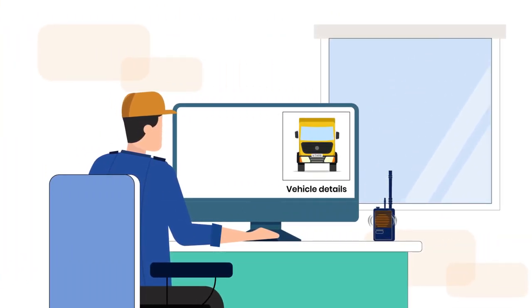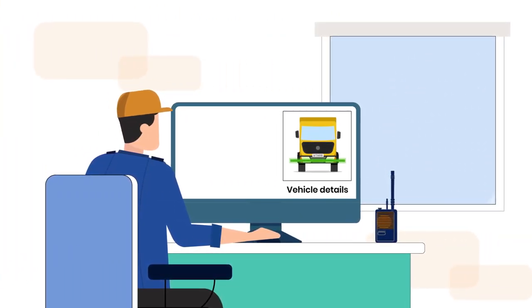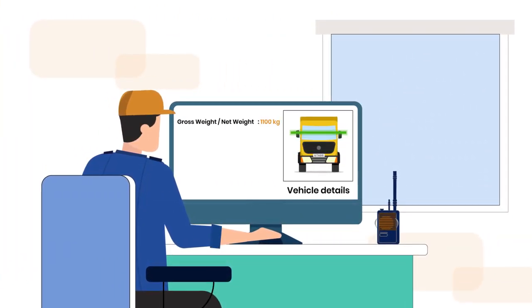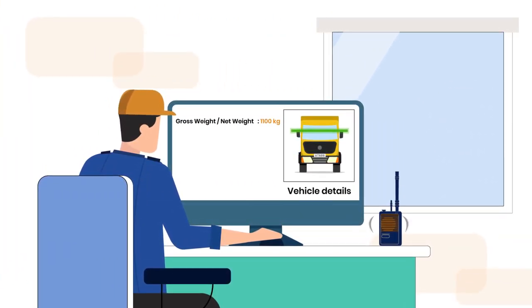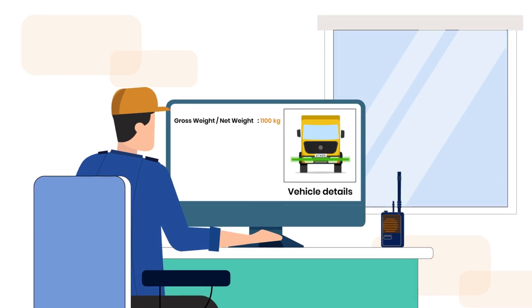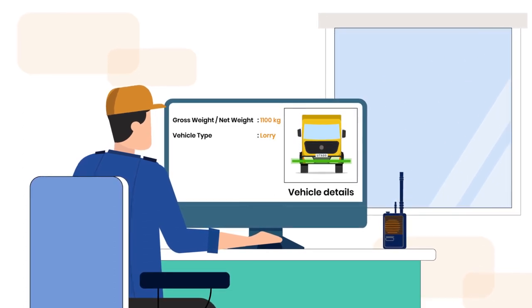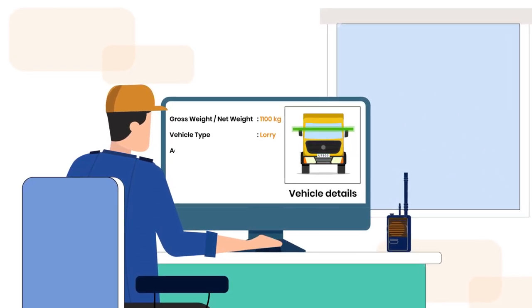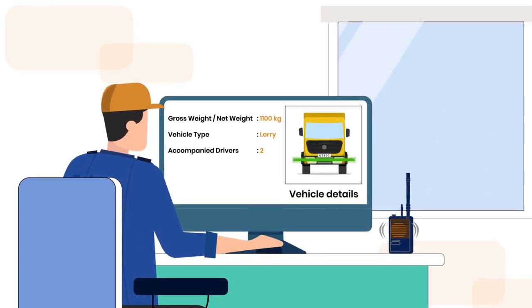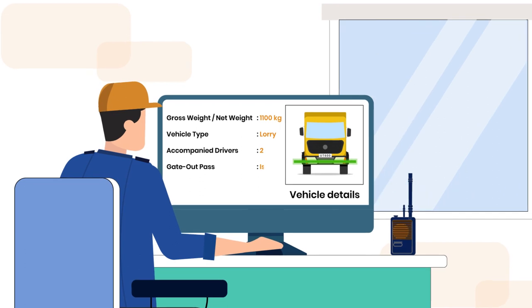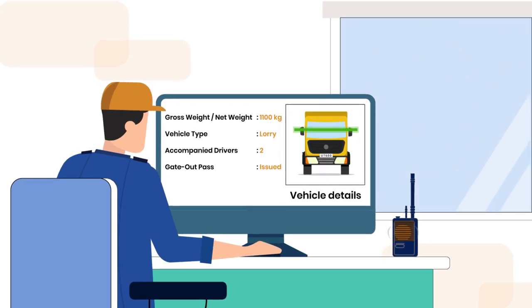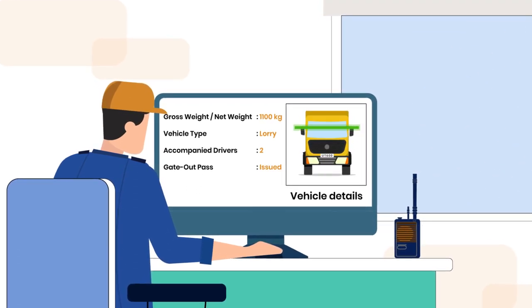Capturing vehicle out information, including gross weight and net weight of the vehicle, checklist parameters based on vehicle type, and generation of a gate-out pass.